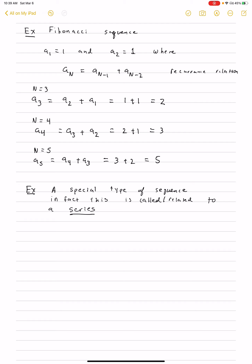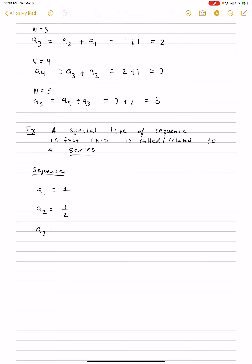Here's the sequence. A sub 1 is 1. A sub 2 is one half. A sub 3 is one fourth — you could also write this as one half squared. A sub 4 is one eighth, or one half cubed. A sub 5 is one sixteenth, which is one half to the fourth power, and so on. So this is the sequence.